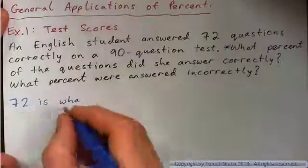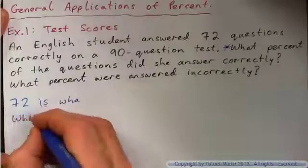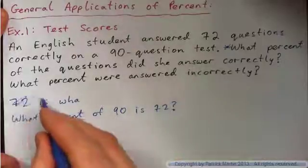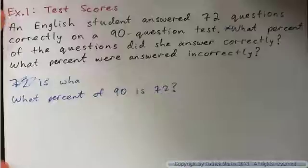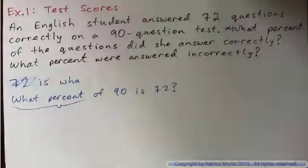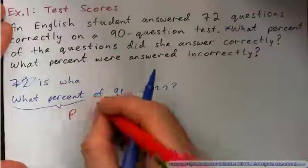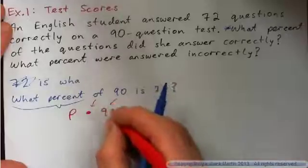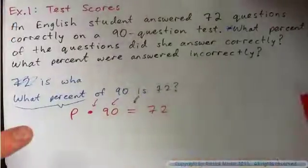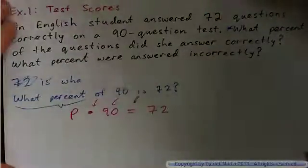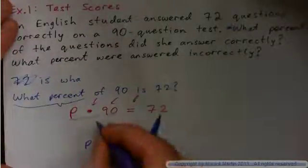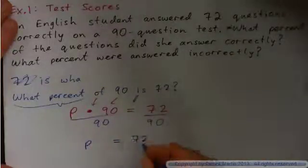We can write it as: what percent of 90 is 72? We turn this into an equation. 'What percent' becomes P, 'of' becomes multiply, so we get P times 90 equals 72. To get P by itself, divide both sides by 90, so P equals 72 over 90.